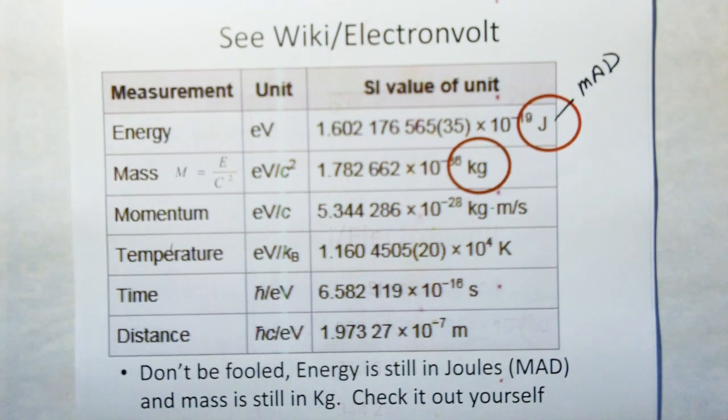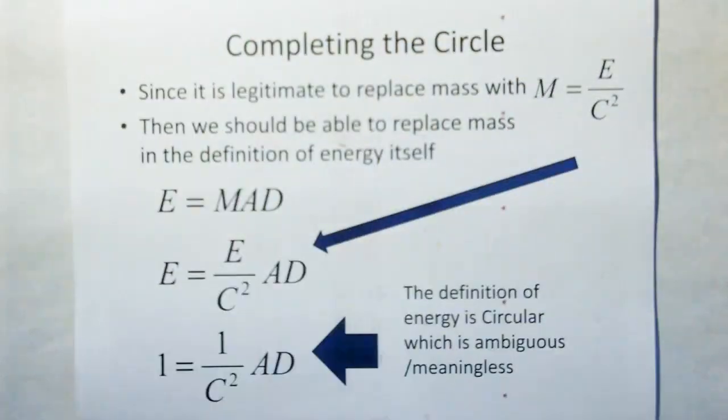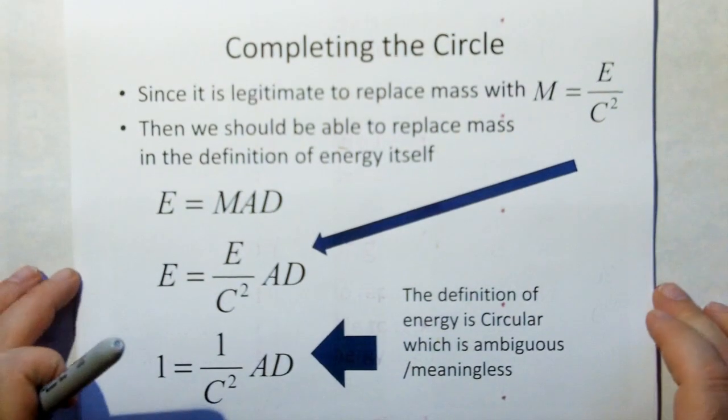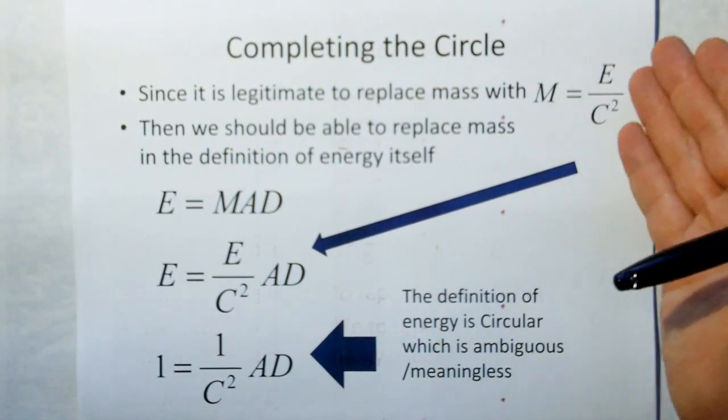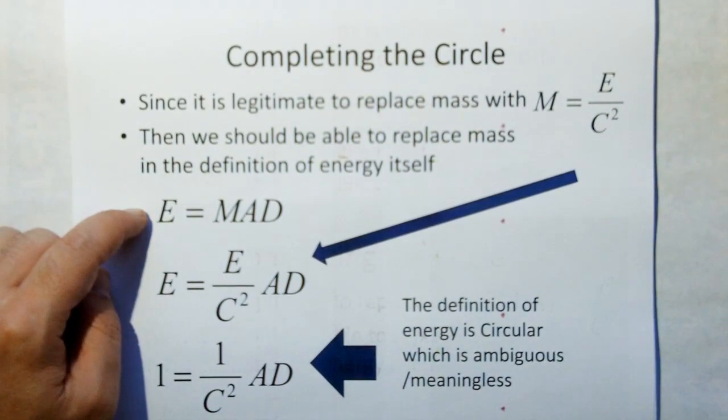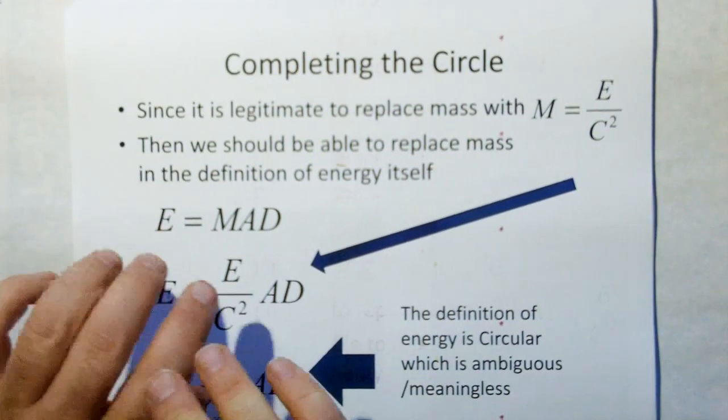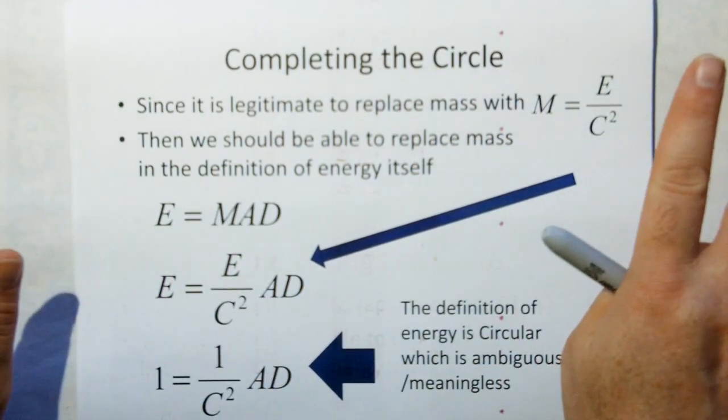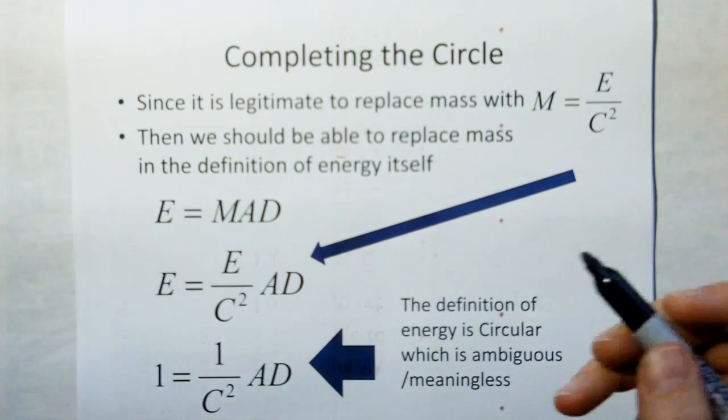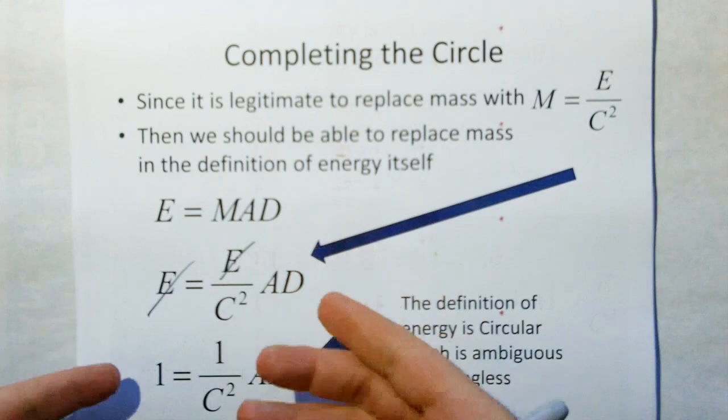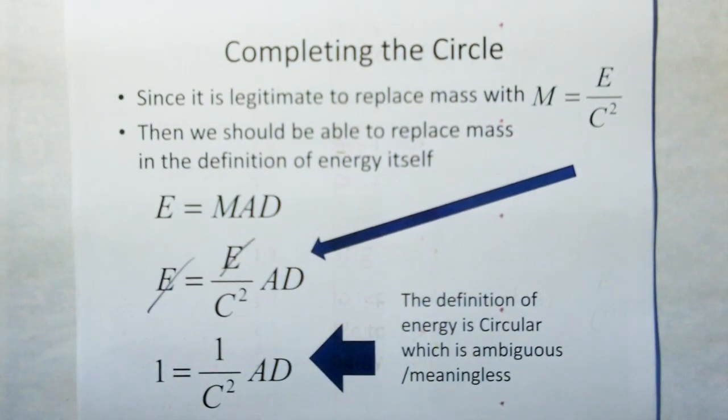So, let's do what they do. Let's take mass from E equals MC squared, solve for mass, and substitute mass into the correct definition, the trivial definition for energy. So, we can switch mass out. Basically we're taking mass here and we're substituting this equation, which arrives at this. And then look what we got there. There's your circular definition. Energy, divide both sides by energy, and you get the circular definition. So, my friends, present-day science is built on a circular definition, which is ambiguous and meaningless.